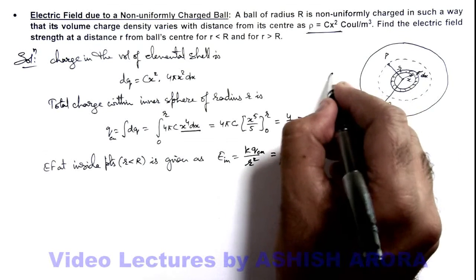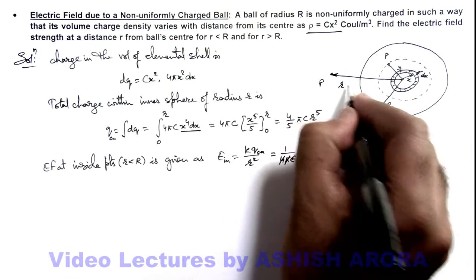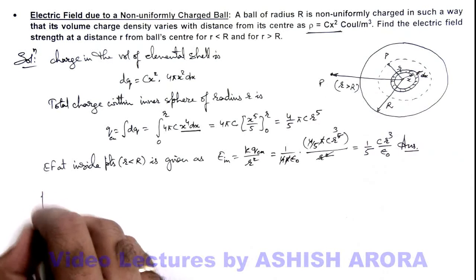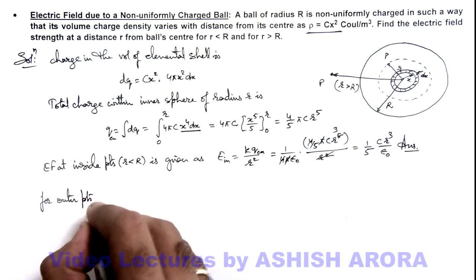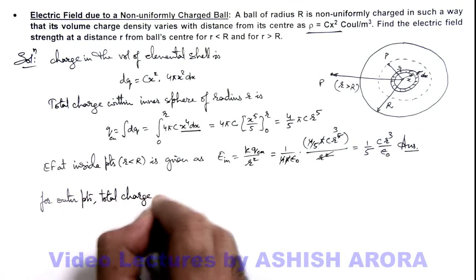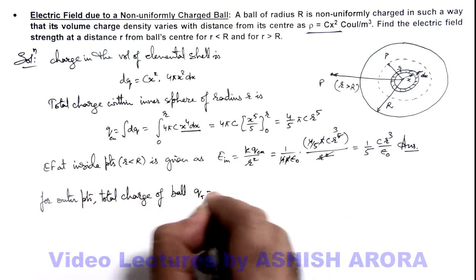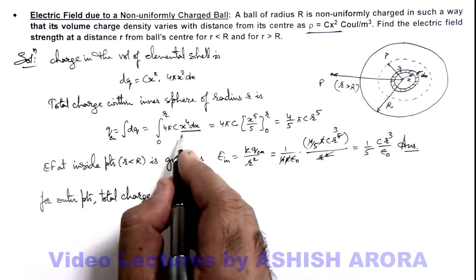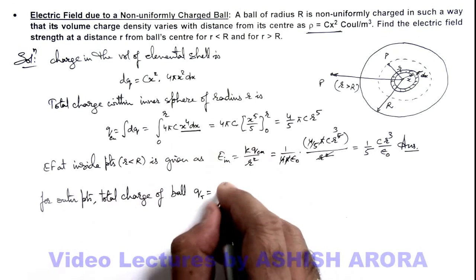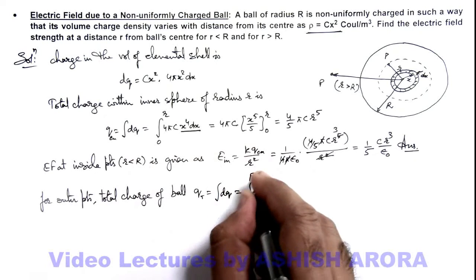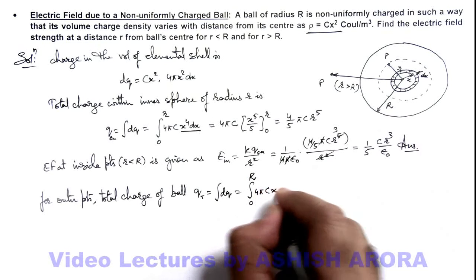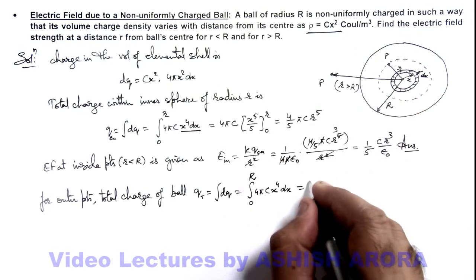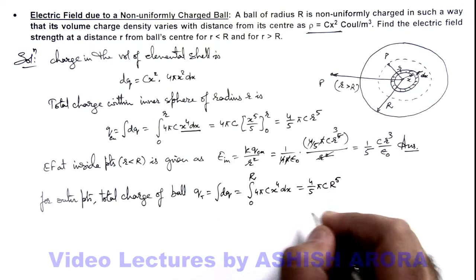If we wish to calculate the field at an outer point P located at distance r greater than capital R, then the electric field is due to the whole charge of the ball. We calculate the total charge of the ball, Q_total, by integrating dq from zero to capital R. This gives us the integral of 4πcx⁴ dx from zero to R, which yields Q_total = (4/5)πcR⁵.